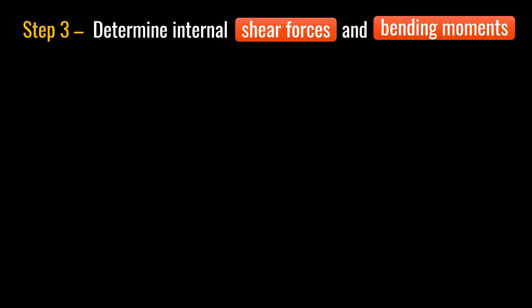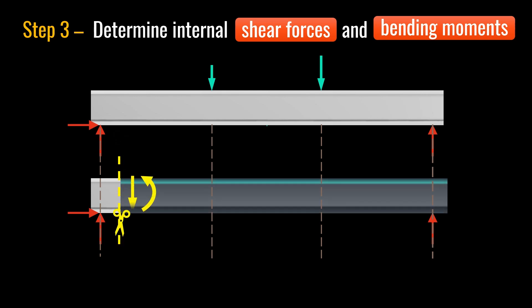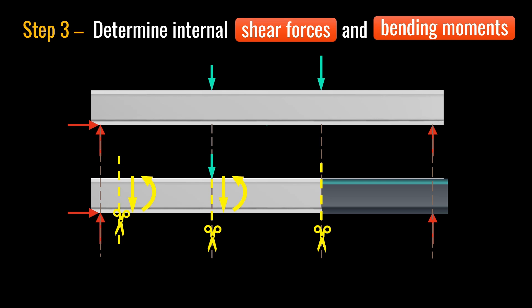The final step is to find internal forces and bending moments along the length of the beam. To determine internal forces, we cut, isolate, and balance forces along the beam. If we cut the beam at any point, the internal forces and moments must cancel out external forces and moments to maintain equilibrium. We start at one side of the beam and move the location of the cut along the beam, finding shear forces and bending moments at each location until the entire beam is covered.